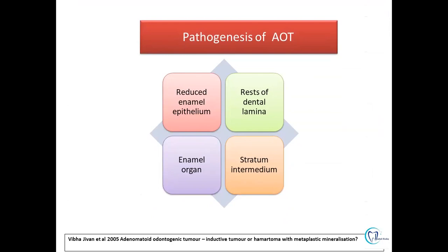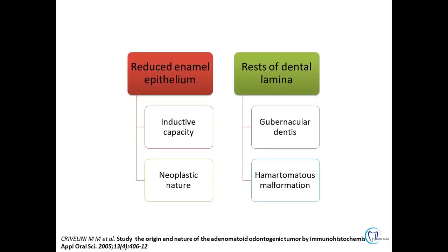The histogenetic origin of AOT can arise from: reduced enamel epithelium; the cell rests of Serres (rests of dental lamina) residing in the gubernacular canal; or the enamel organ and stratum intermedium. Tumours originating from reduced enamel epithelium have inductive capacity and give rise to AOT of neoplastic nature, whereas tumours originating from rests of dental lamina or gubernacular dentis give rise to the hamartomatous type of AOT.